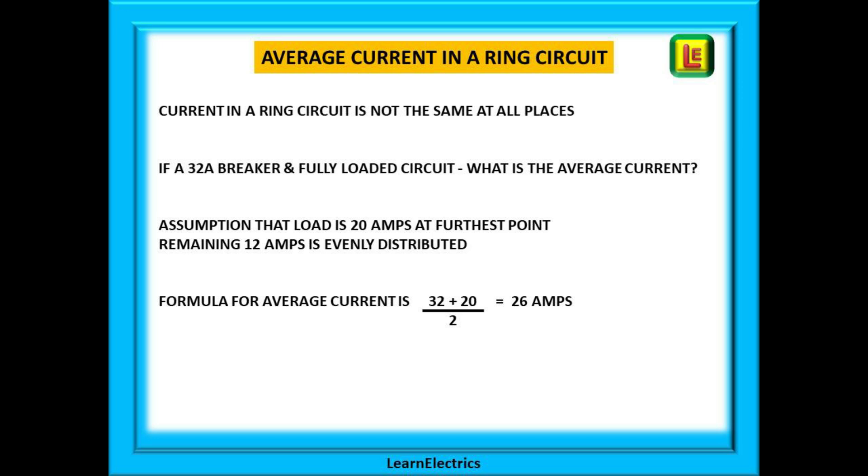The cables near the consumer unit, yes, they will carry a high load, but the cables at the far end of the circuit will carry less current. We can therefore use what is called the average current for our ring circuit.